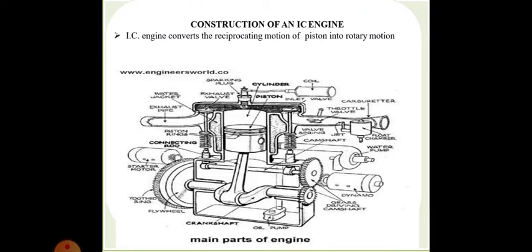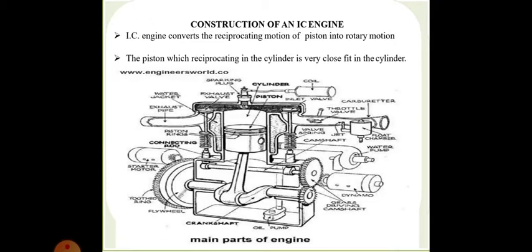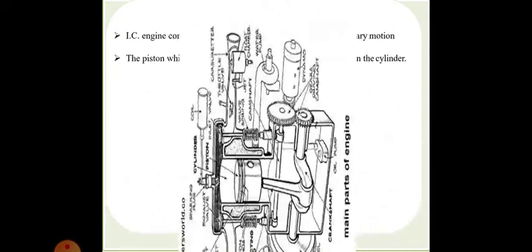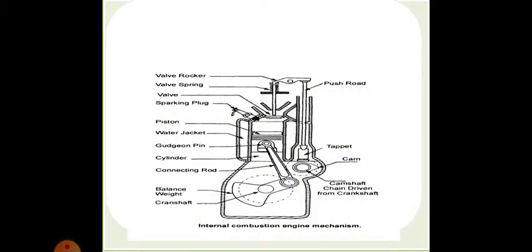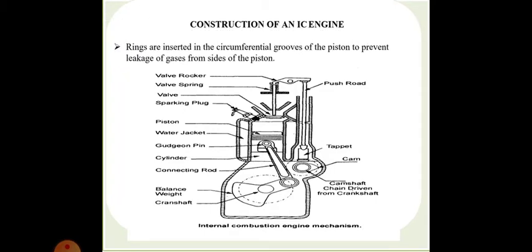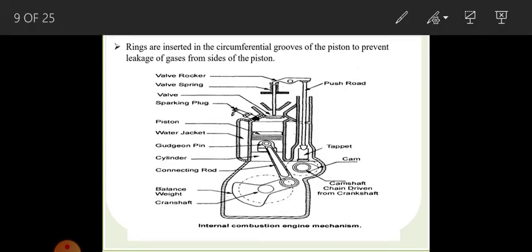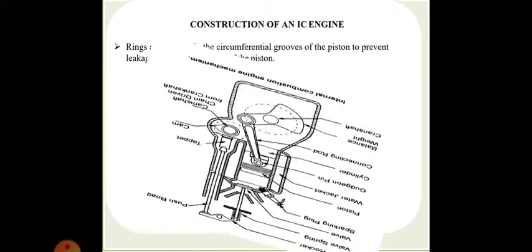The IC engine converts the reciprocating motion of the piston to rotary motion. The piston reciprocates in the cylinder and is a very close fit in the cylinder. In a diesel IC engine, the rings are inserted in the circumferential grooves of the piston to prevent leakage of gases. The main parts include: rocker arm, valve spring, valve, spark plug, piston, water jacket, gudgeon pin, cylinder, connecting rod, weight balance, crankshaft, camshaft, chain driven from the crankshaft, tappet, and push rod.